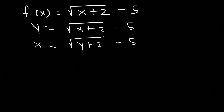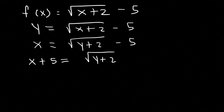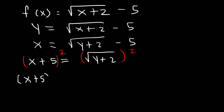Next, solve for y — try to get it by itself. So let's add 5 to both sides. So we're going to have x plus 5 is equal to the square root of y plus 2. Now we need to get rid of the square root on the right side — how can we remove that radical? We need to take the square of both sides of the equation. So on the left side, we have x plus 5 squared, which is x plus 5 multiplied to itself twice — so it's just x plus 5 times x plus 5. On the right, we simply have y plus 2.